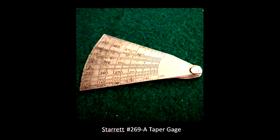This is it, the Starrett 269A taper gauge. At first it looks like some sort of a feeler gauge with all these different leaves coming off of a central point here. Looks just like a feeler gauge, but you see the graduations here.